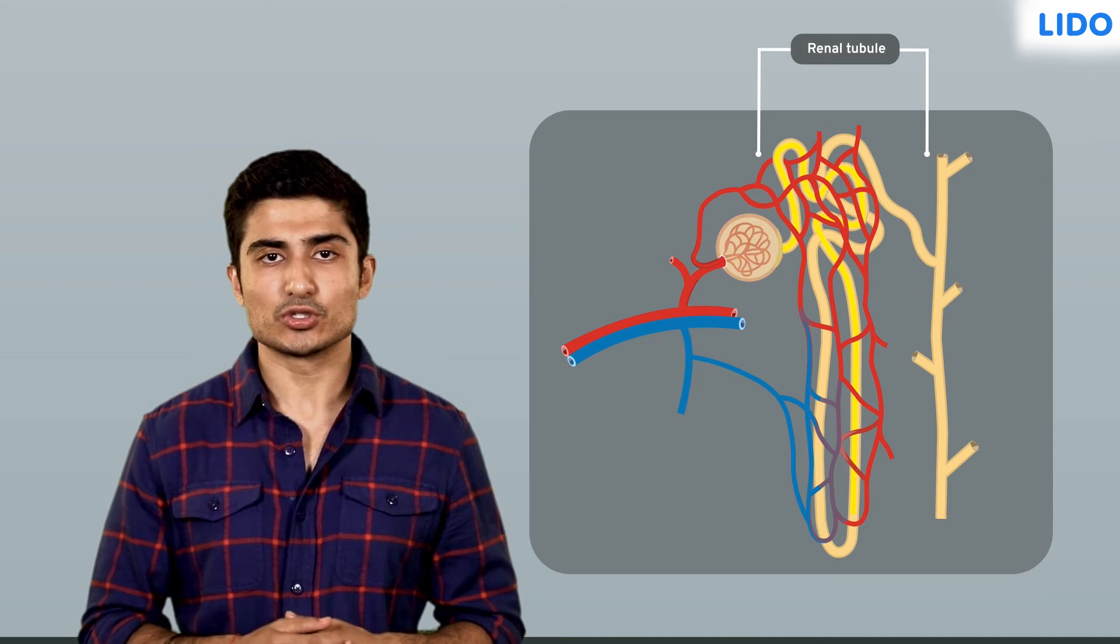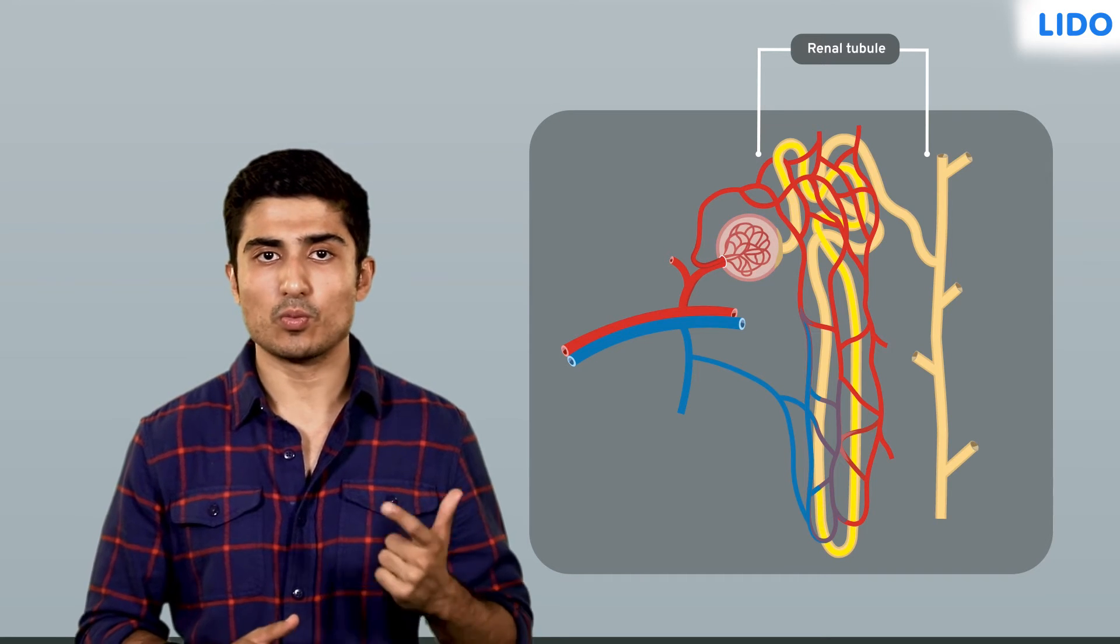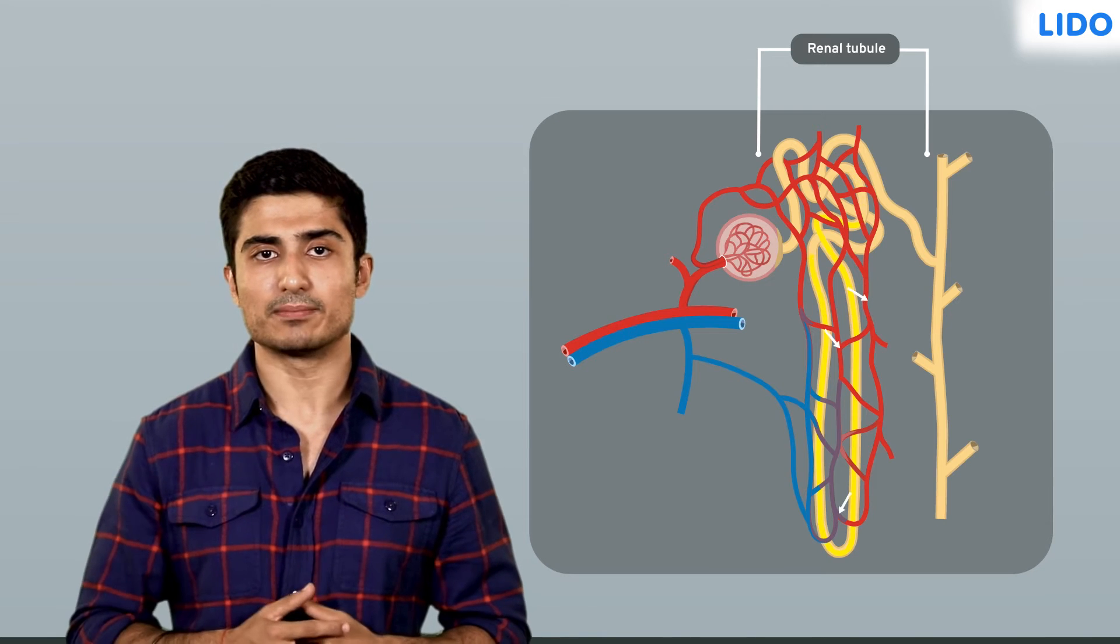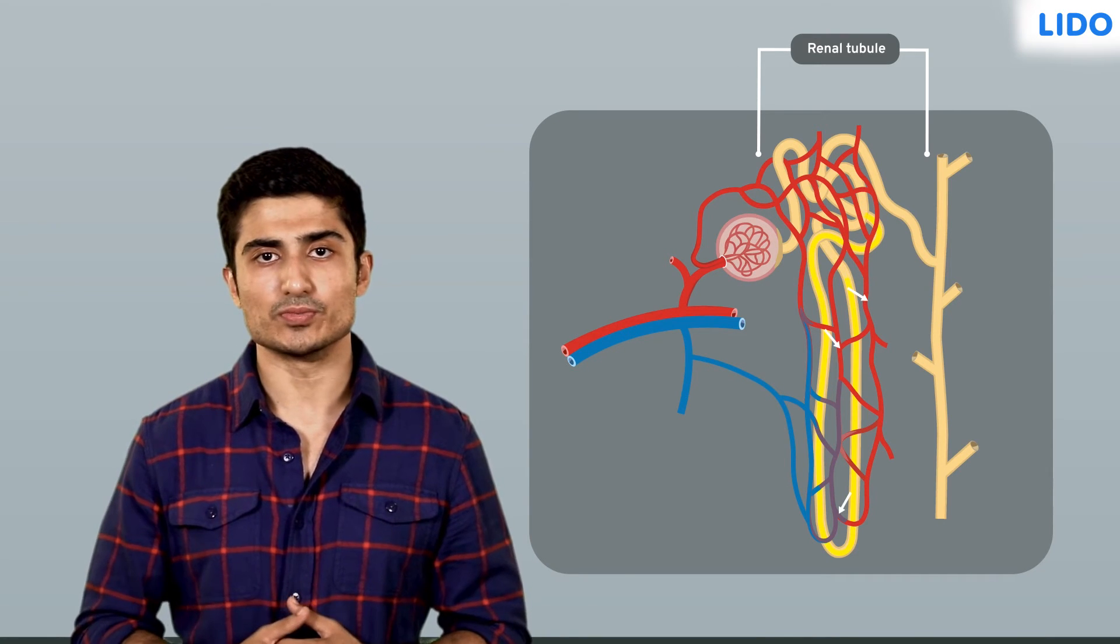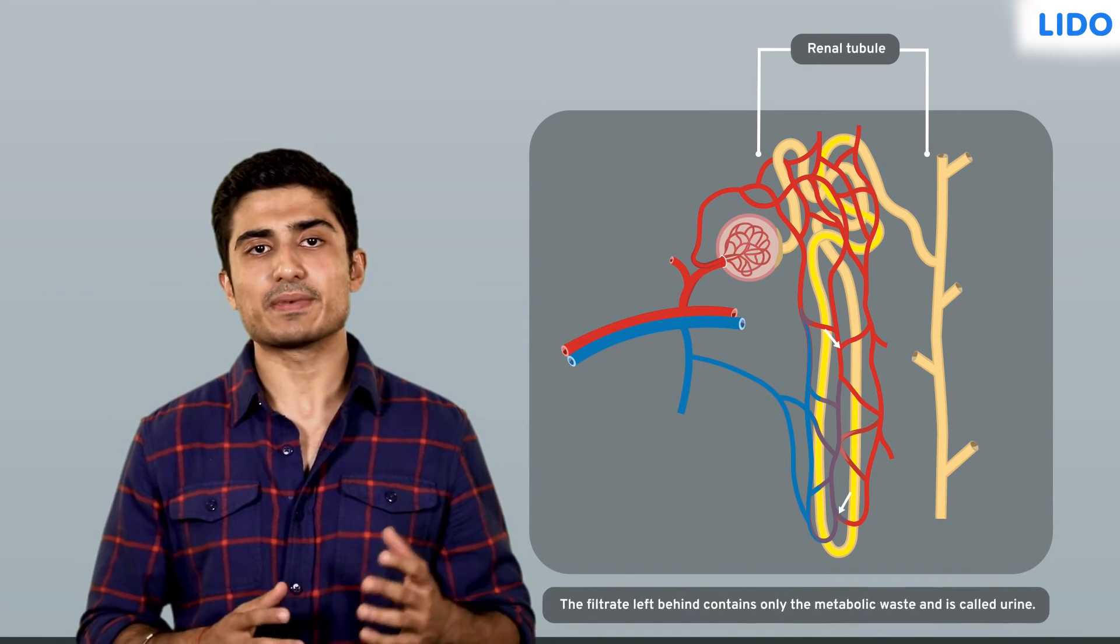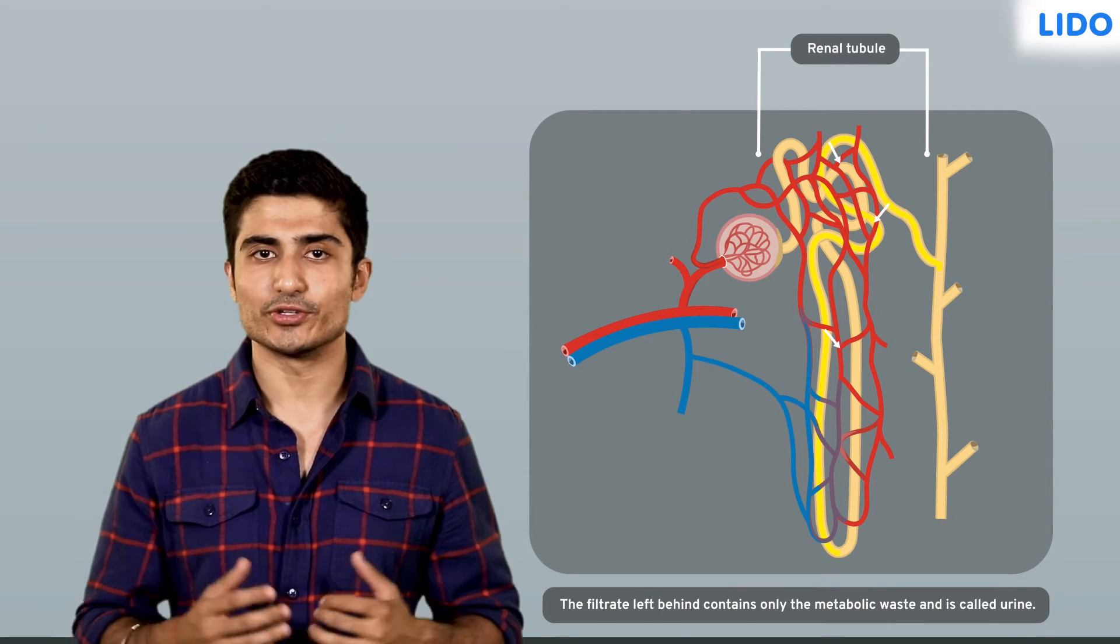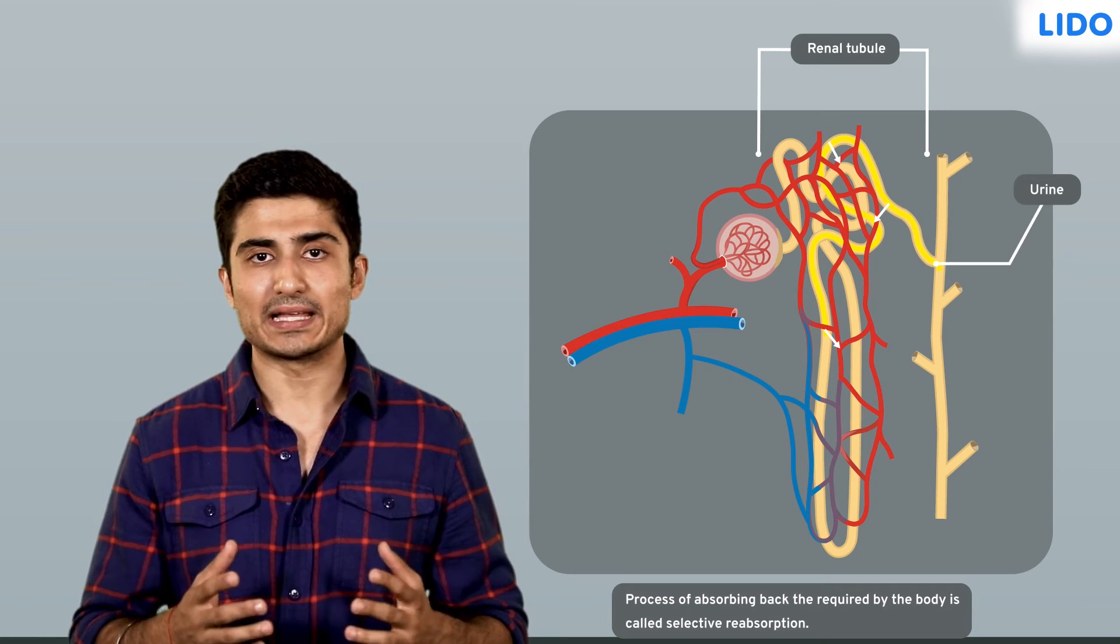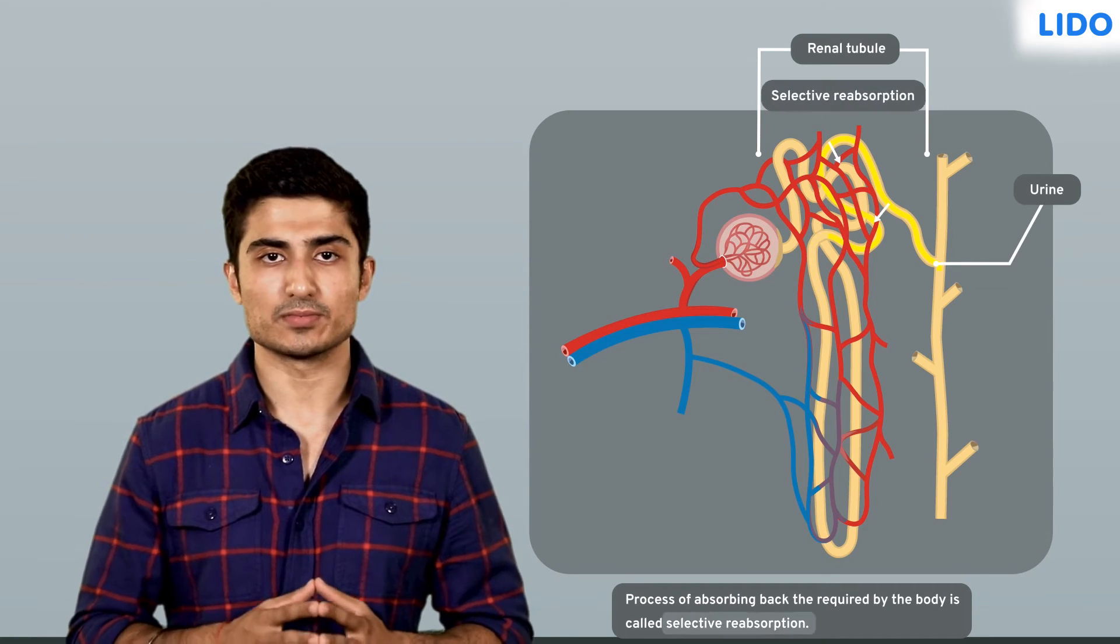As the filtrate passes through the tubule, the components like glucose, water, and some salts required by the body are absorbed back by the blood capillaries surrounding the tubules. The filtrate left behind contains only the metabolic waste and is called urine. This process of absorbing back the required substances by the body is called selective reabsorption.